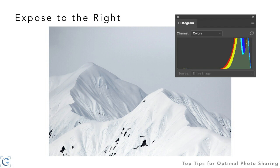Be sure not to clip the highlights. Exposing to the right means the image is often a little brighter than you want for the final look, so you'll need to darken it down in processing. Darkening down does not result in a loss of quality the way that brightening up an underexposed image does — brightening a dark image causes considerable noise. If you take an image captured relatively dark and brighten it to reveal shadow detail, you will see noise in those shadows even with the best capture, because there is simply no information there.